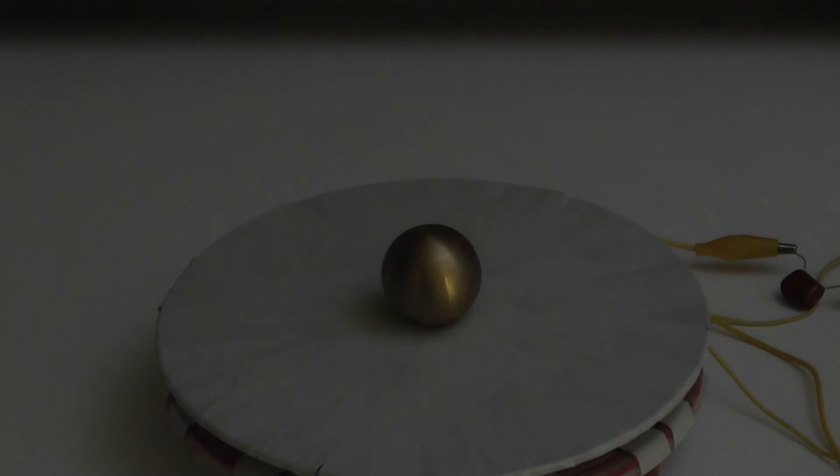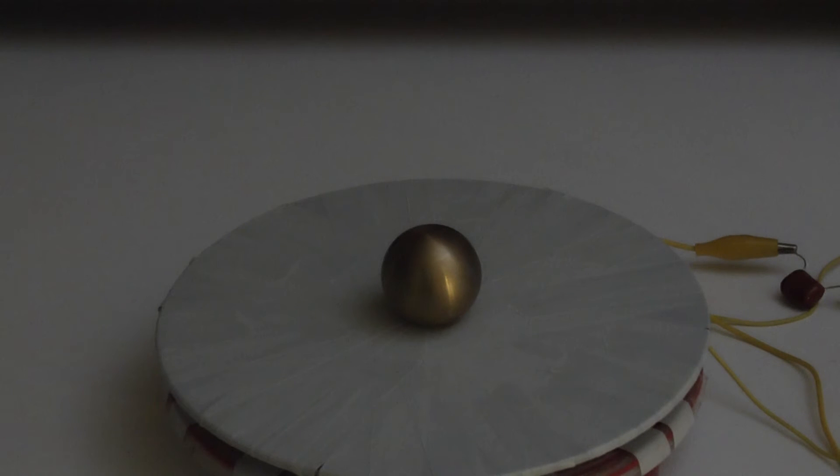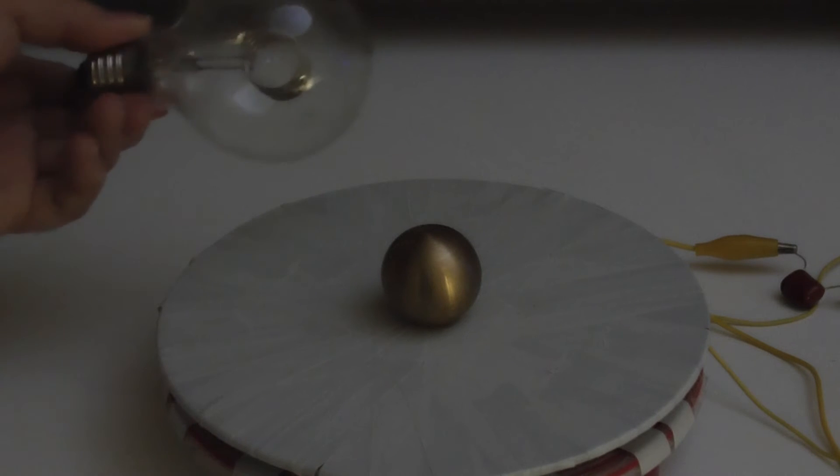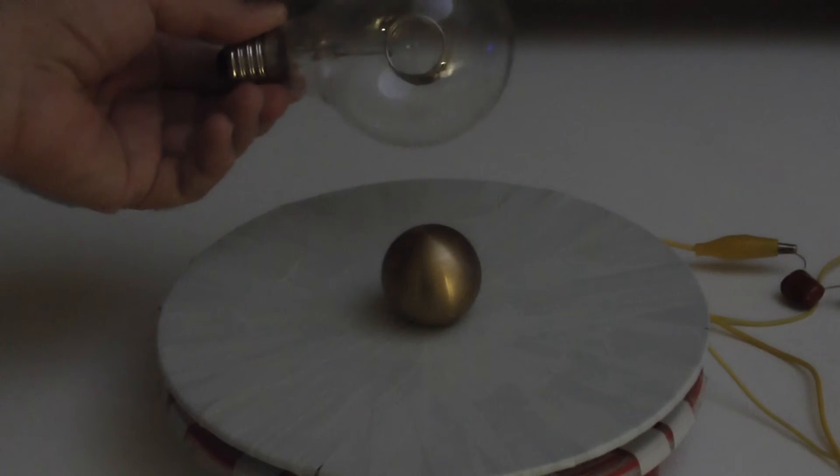I have now energized the spiral coil with very low power—below 2 watts. What I want to show here is this glow bulb, which creates a plasma inside, and how the plasma behaves when you look inside this coil.